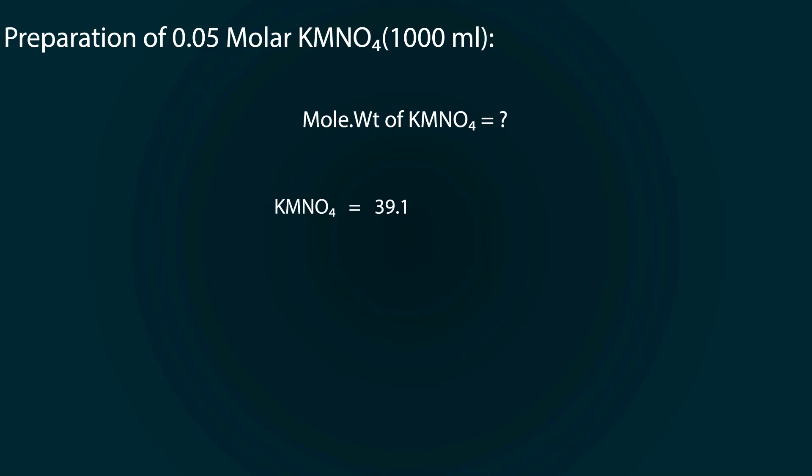The molecular weight of KMnO4 is: atomic mass of potassium (39.1) plus manganese (54.9) plus oxygen (16 × 4). After calculation, we have 158 grams per mole.